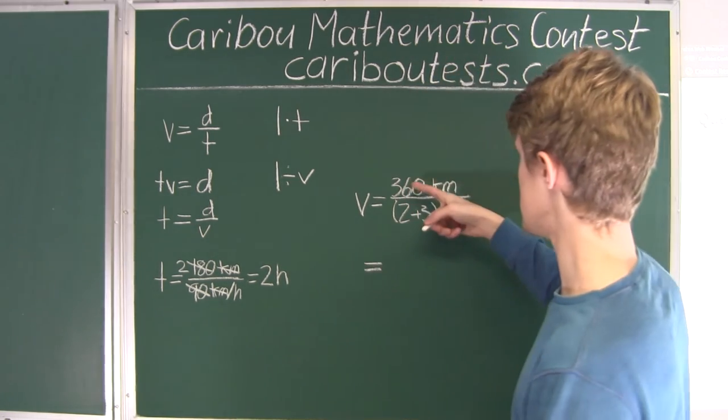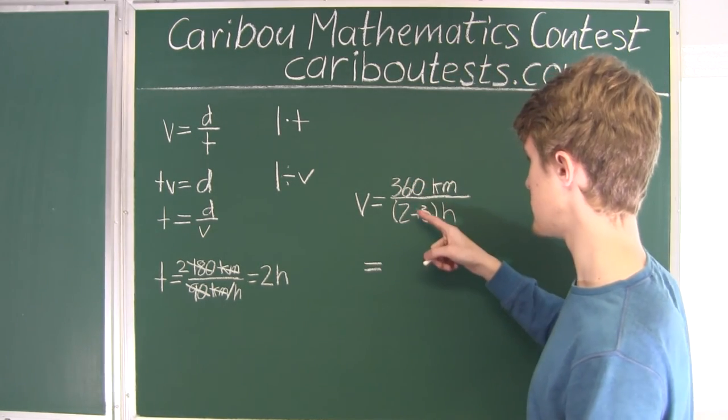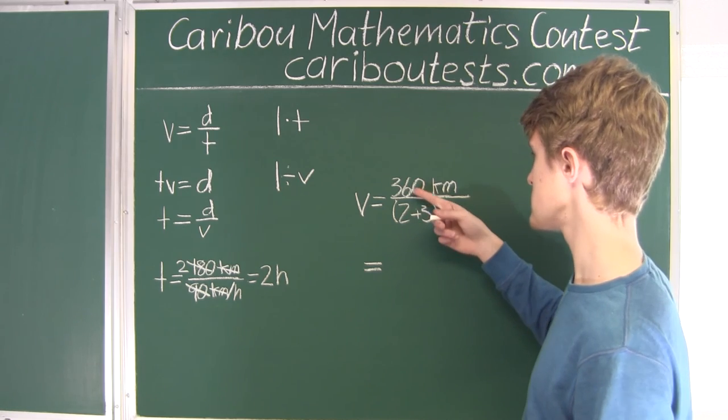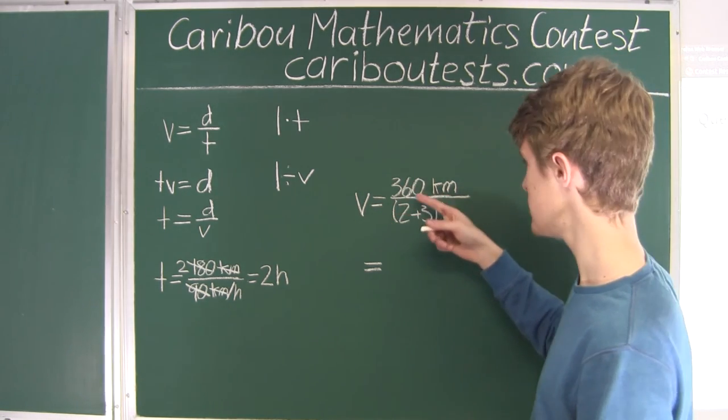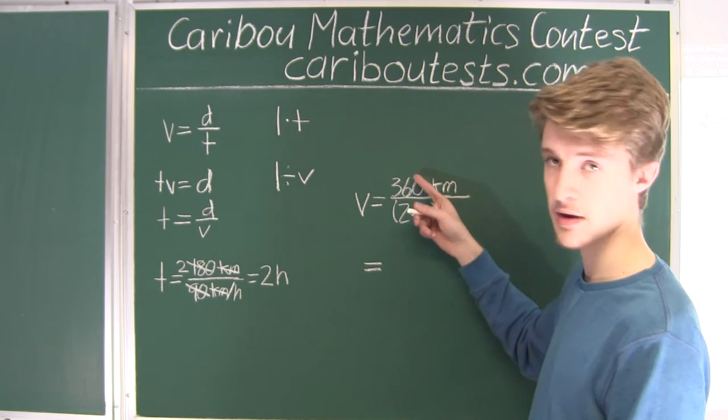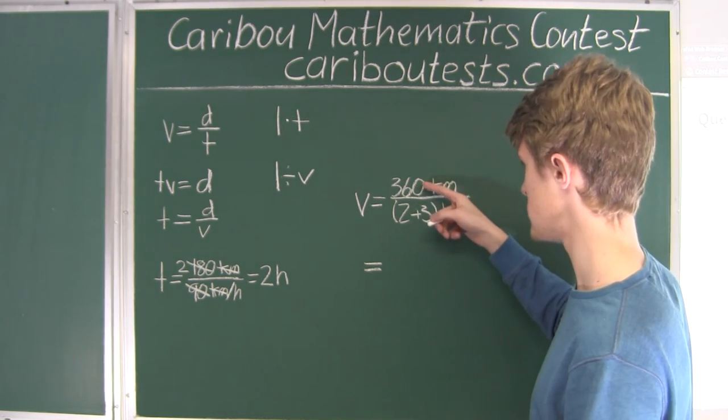So this is 360 divided by 5. Since 5 is half of 10, it's like doing 360 divided by 10, and you just take off the 0. That would be 36, and then you would multiply that by 2.